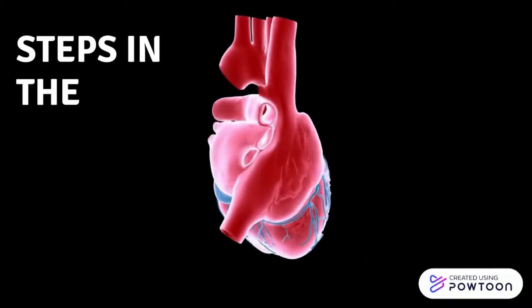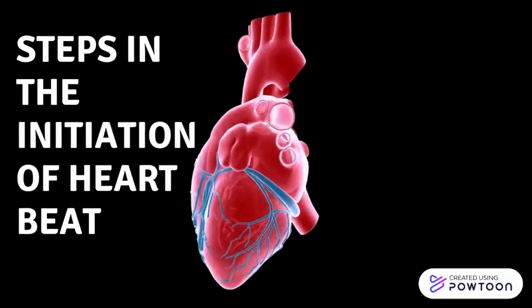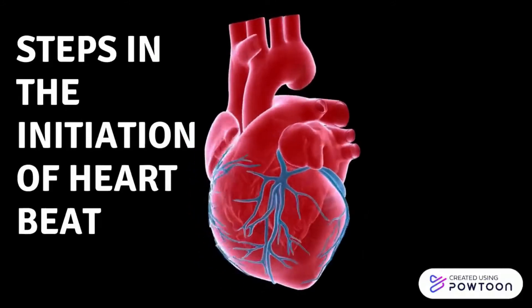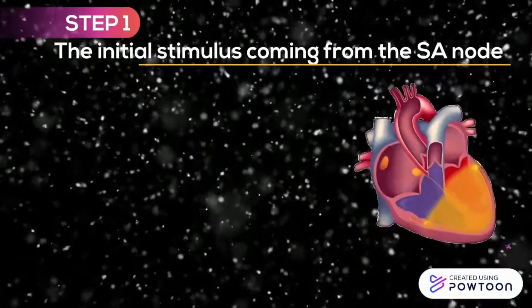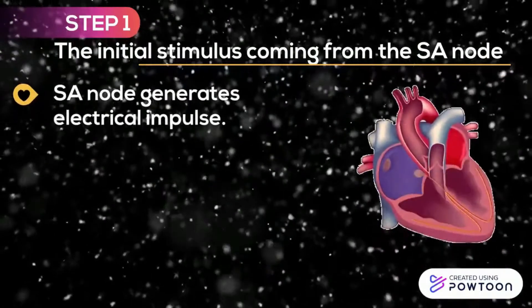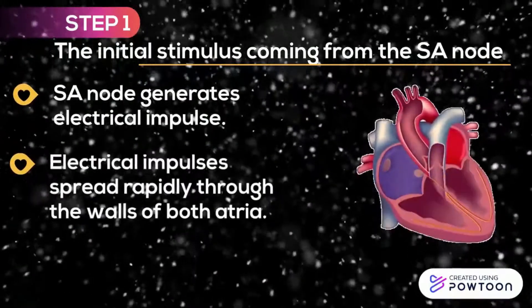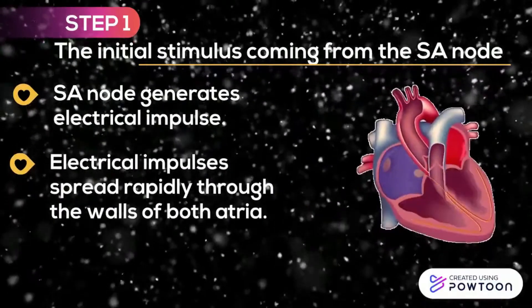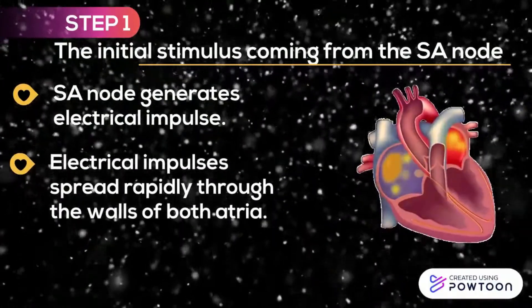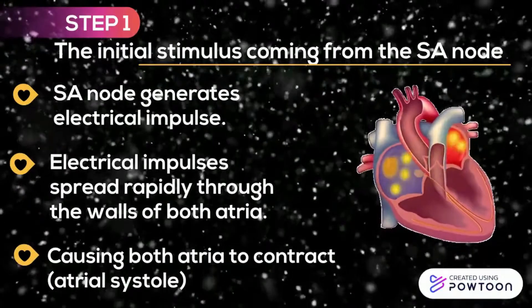Steps in the Initiation of Heartbeat. Step 1: The initial stimulus comes from the SA node. The SA node generates an electrical impulse. Electrical impulses spread rapidly through the walls of both atria, causing both atria to contract.